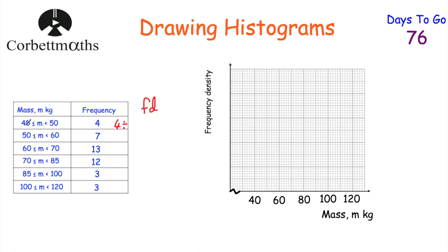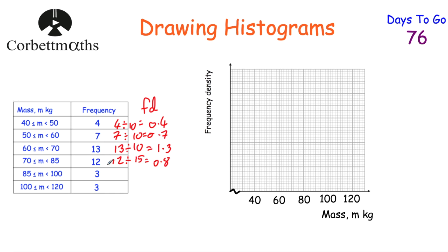I've added a frequency density column. Frequency 4 divided by class width 10 gives 0.4. Frequency 7 divided by 10 gives 0.7. Frequency 13 divided by 10 gives 1.3. Frequency 12 divided by class width 15 gives 0.8. Frequency 3 divided by 15 gives 0.2. Finally frequency 3 divided by class width 20 gives 0.15. So our frequency densities are 0.4, 0.7, 1.3, 0.8, 0.2, and 0.15.